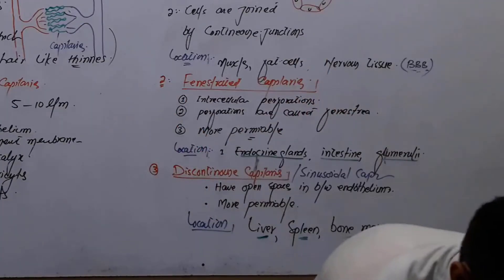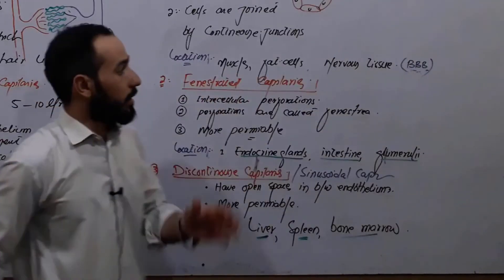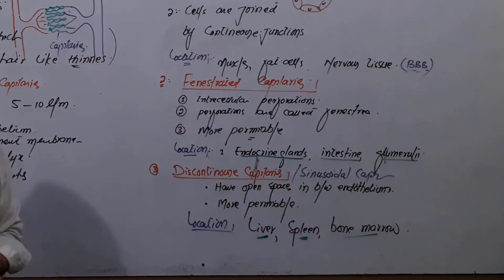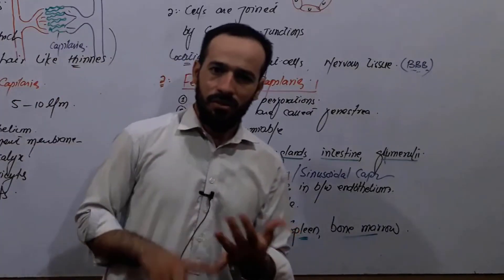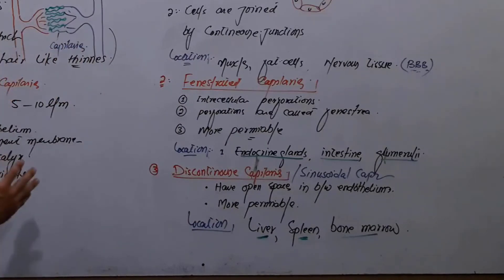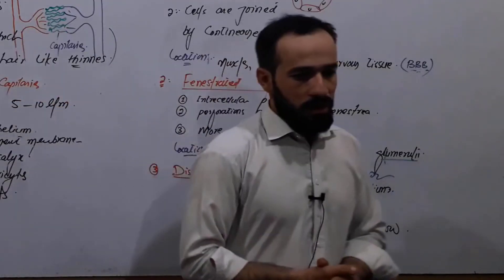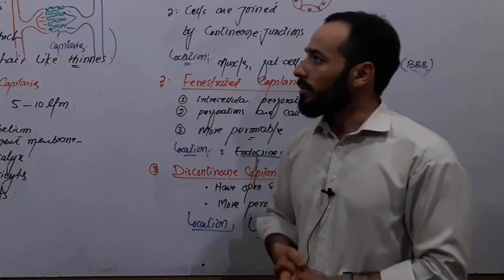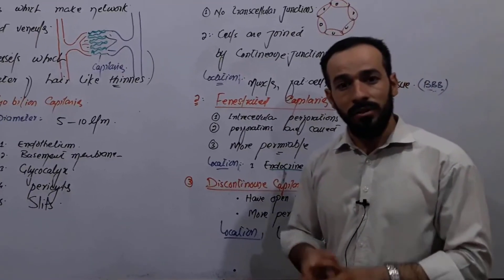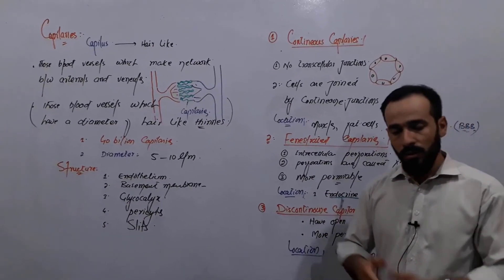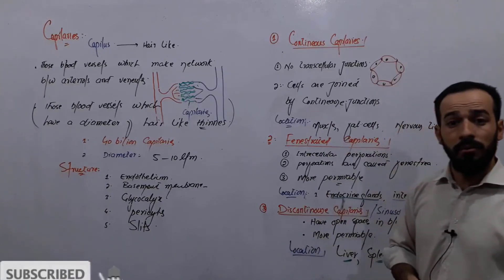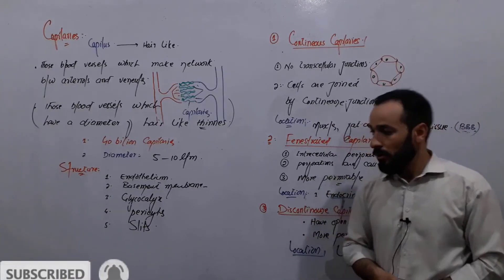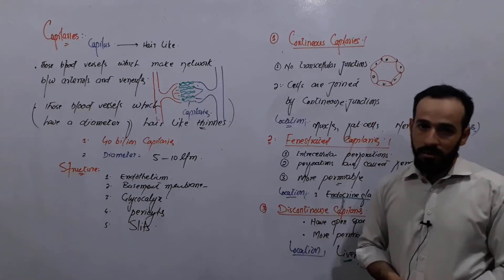So friends, this was about the structure and types of capillaries. We have covered the types of blood vessels, their structure, differences between them, and the smallest blood vessels — the capillaries. In the next lecture, I will record a lecture on the different arteries and veins of the body, starting from the upper parts and moving toward the lower parts. Be with us and please subscribe to our channel. Thank you so much.